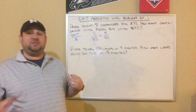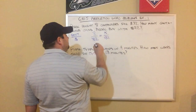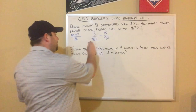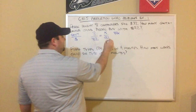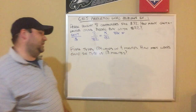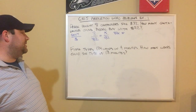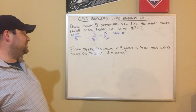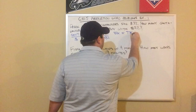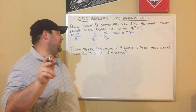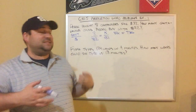Now we're going to solve this proportion, which is what we learned yesterday. To solve a proportion, remember you cross multiply. I always start with the diagonal that has the variable: 32 times x is just 32x. Then I'm going to do 8 times 92. 90 times 8 is 720, and 8 times 2 is 16, so that's 736. So I have 32x = 736.